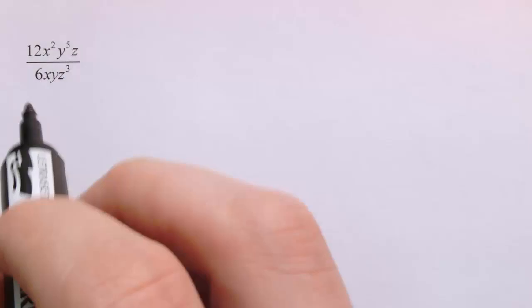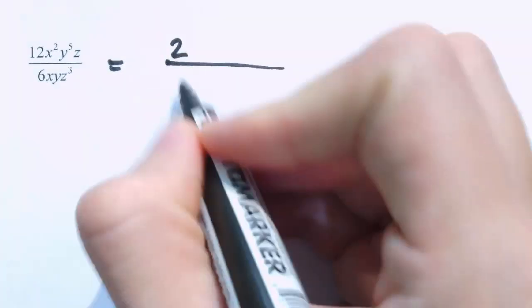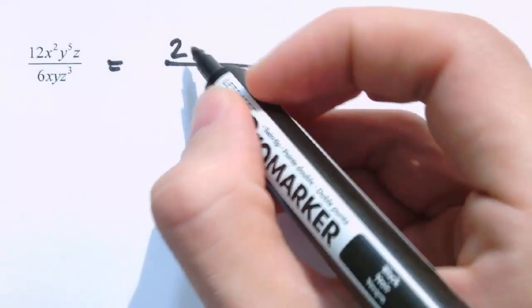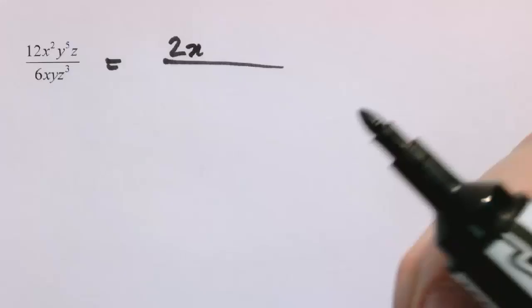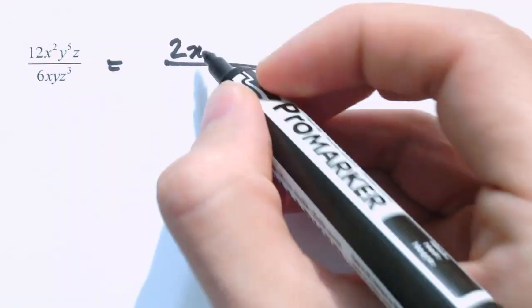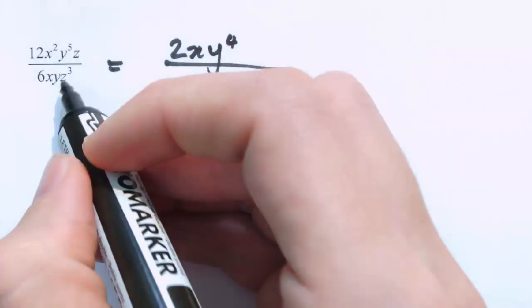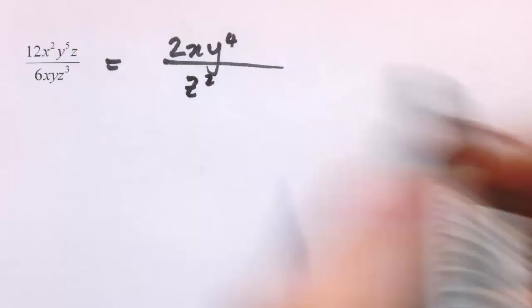Here's a harder looking example: 12x squared y to the 5 times z divided by 6xyz cubed. There are lots of factors we can cancel. There's a numerical factor of 6 — 12 divided by 6 is 2, and 6 divided by 6 is 1, so that won't leave anything on the bottom. Looking at the factors of x, we've got x squared over x, so a factor of x cancels, leaving just x on the top. y to the 5 divided by y leaves y to the 4 on the top. And z divided by z cubed leaves z squared on the bottom. So that's our final answer.